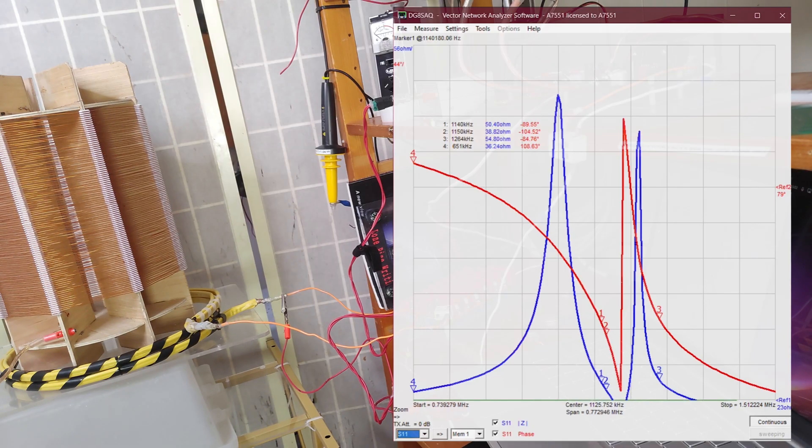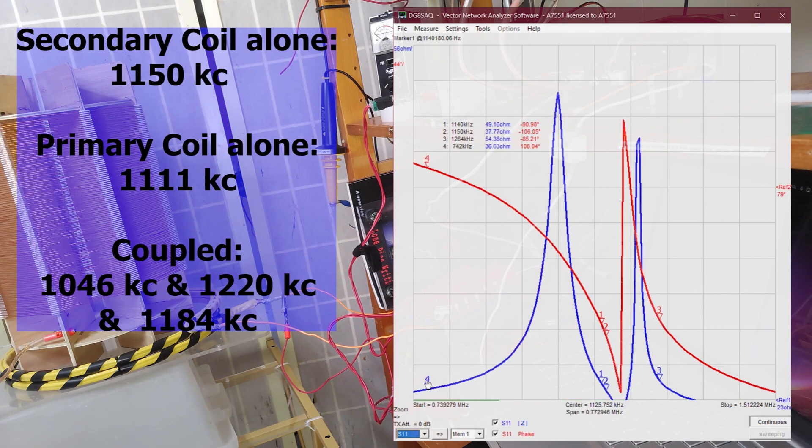What we can see is now there's two peaks, these two blue spikes, the two impedance maxima. One at 1046 kilocycles and the other at 1220 kilocycles. The series mode minimum point is around 1184 kilocycles.